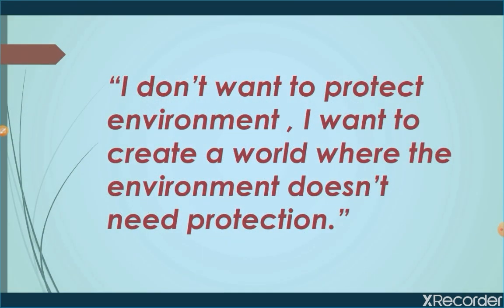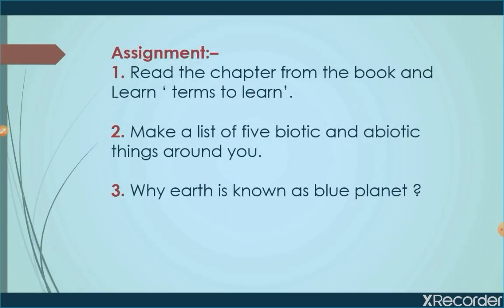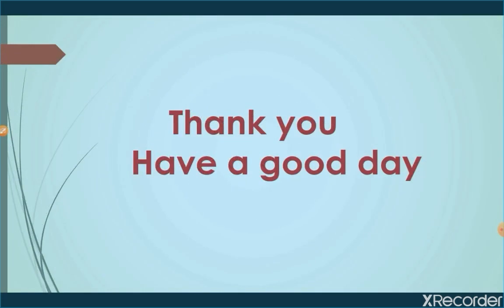Let's sum up today's topic with this thought: 'I don't want to protect the environment — I want to create a world where the environment doesn't need protection.' For your assignment, read the chapter from the book and learn the terms given at the back. Make a list of five biotic and abiotic things around you, and write in your notebook why earth is known as the blue planet. All work to be done in your notebook. Thank you and have a good day.